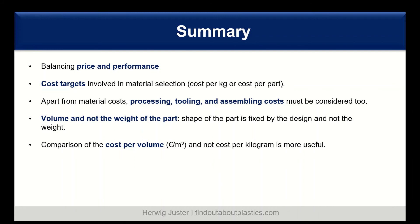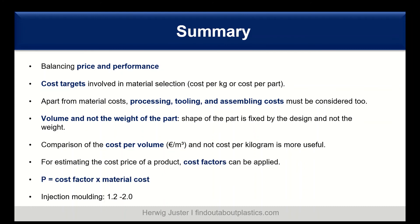The shape of the part is fixed by design and not the weight, so it's better to compare cost per volume and not cost per kilogram. You can also work with cost factors to estimate the cost price of a product. For example: product price P equals cost factor times the material cost. For injection molding, this cost factor can range from 1.2 to 2, depending on whether you have a consumer good or a more technical part.